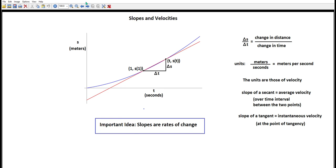Now there's an important idea here. You'll notice that this slope is a rate, meters per second. Slopes are always rates. They're the rate of change of the dependent variable with respect to the independent variable.